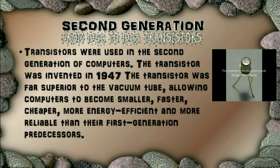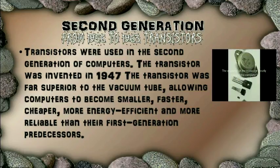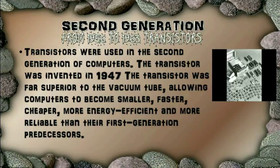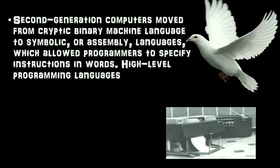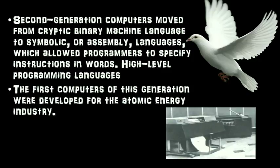The second generation is from 1956 to 1963, in which transistors were used. The transistor was invented in 1947 and was far superior to the vacuum tube, allowing computers to become smaller, faster, cheaper, more energy efficient and more reliable than first generation predecessors. The second generation computers moved from cryptic binary machine language to symbolic or assembly languages, which allowed programmers to specify instructions in high-level programming language. The first computers of this generation were developed for the atomic energy industry.